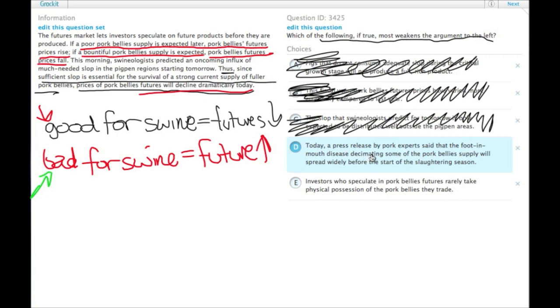Today, a press release by pork experts said that the foot and mouth disease decimating some of the pork belly supply will spread widely before the start of the slaughtering season. So here's something that's totally bad for pigs, which would cause futures prices to go up.